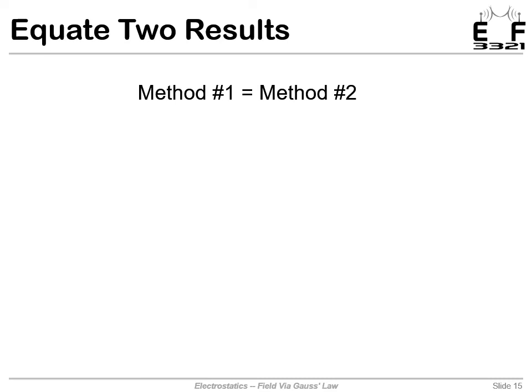So to figure out the expression for the field, we need to equate the results we got from these two methods. Method number one, we got two times a z component of the d field times s. And method number two, integrating the charge density, we got surface charge density times area s.